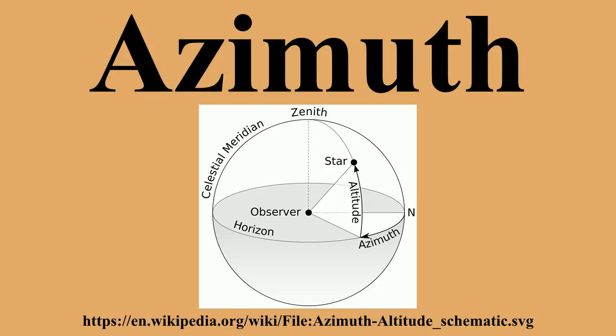Used in celestial navigation, an azimuth is the direction of a celestial body from the observer. In astronomy, an azimuth is sometimes referred to as a bearing. In modern astronomy, azimuth is nearly always measured from the north.